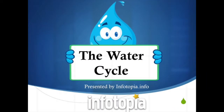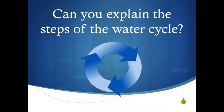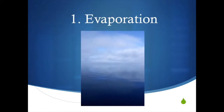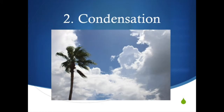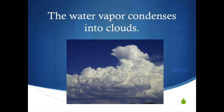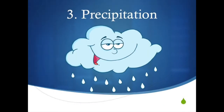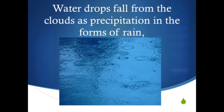Infotopia presents: The Water Cycle. Can you explain the steps of the water cycle? Evaporation: the Sun evaporates water from the oceans into water vapor. Condensation: the water vapor condenses into clouds. Precipitation: water drops fall from the clouds as precipitation.